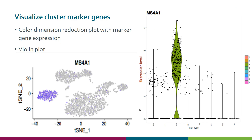We can also visualize the cluster marker genes. For example, we can color UMAP plots with the expression level of a particular gene, and you can also produce violin plots. For example, here we see that this gene is a very good marker for cluster number 2.